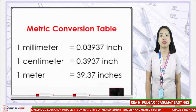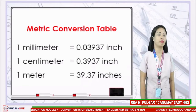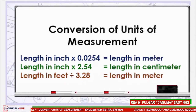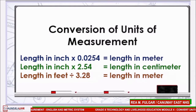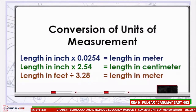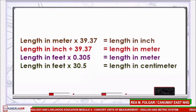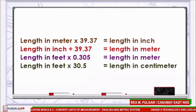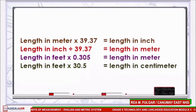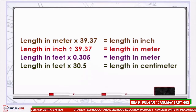In conversion of units of measurement, we can use different formulas. To convert inches to centimeters, multiply by 2.54. To convert centimeters to inches, divide by 2.54. To convert meters to inches, multiply by 39.37. To convert feet to centimeters, multiply by 30.48, and to convert to meters, multiply by 0.305.